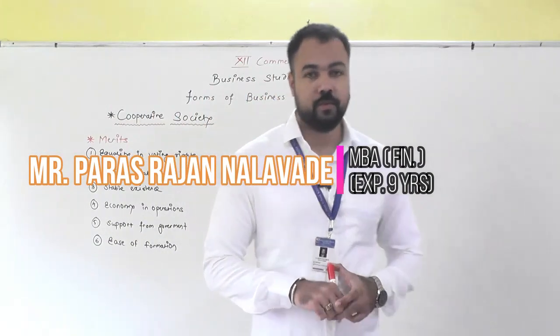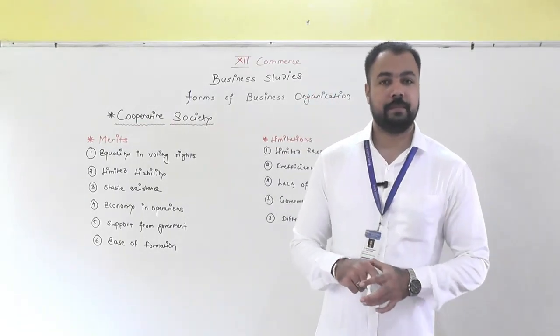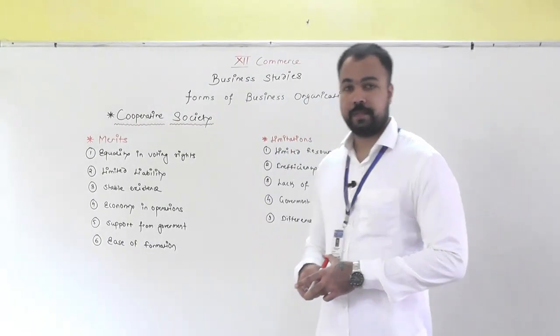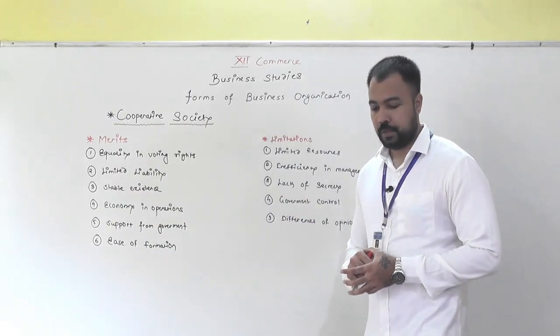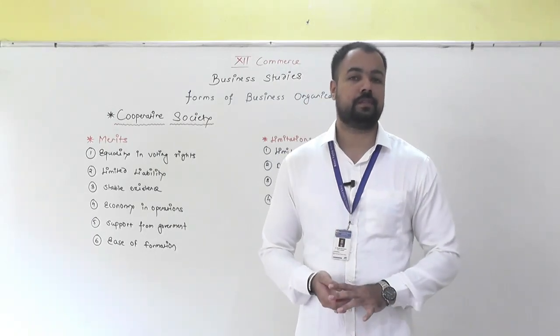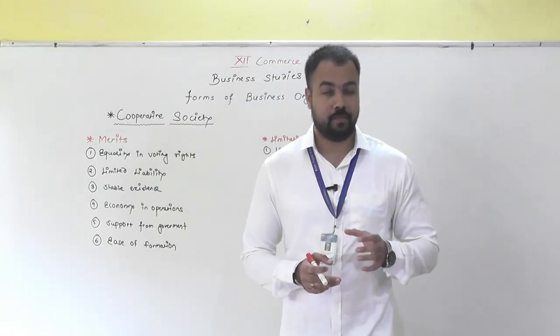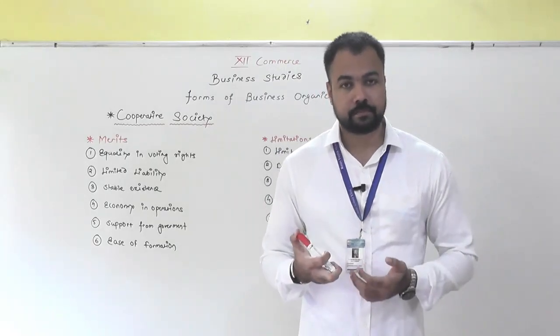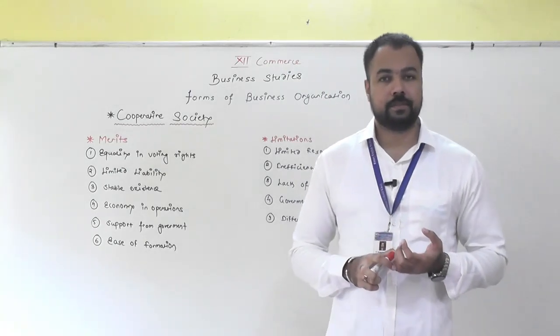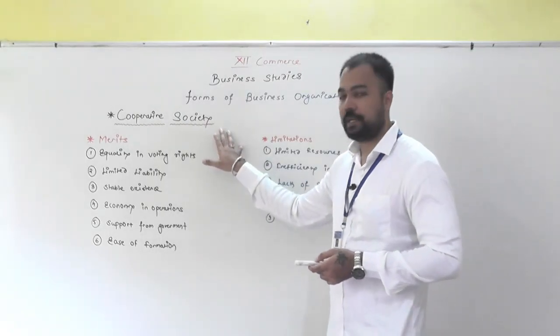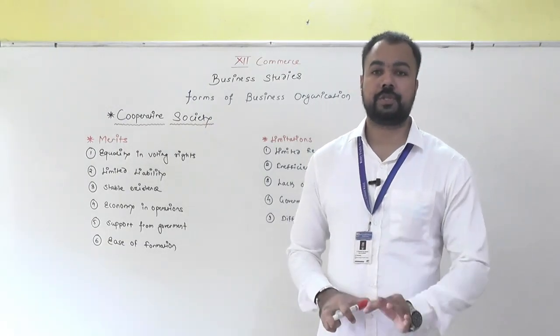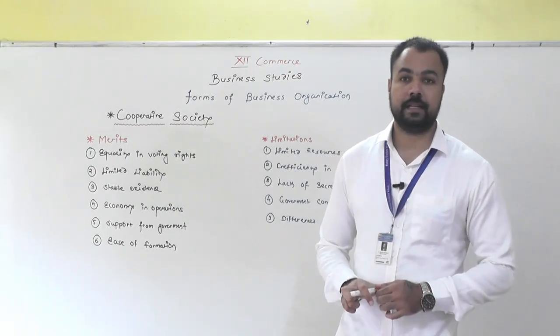Hello everyone, a very good morning to all of you. As we discussed in the last session, the meaning of cooperative society and the features of cooperative society, today we'll see the merits and limitations of cooperative society. Just to revise, a cooperative society is the voluntary association of at least 10 people who come together to form their own society. Mutual help and mutual understanding is the main motive of any cooperative society. The main thing is your society must be registered under the Cooperative Societies Act 1912.